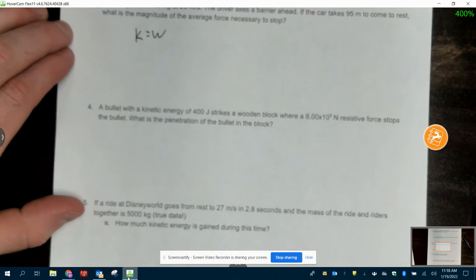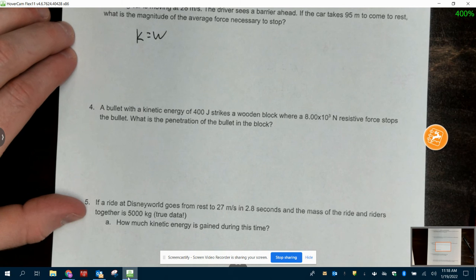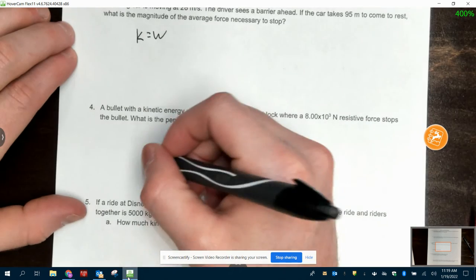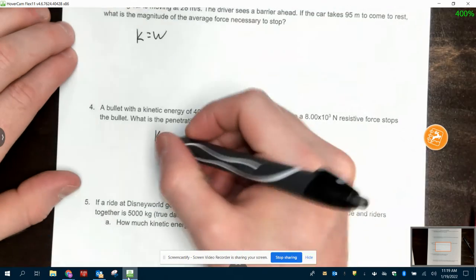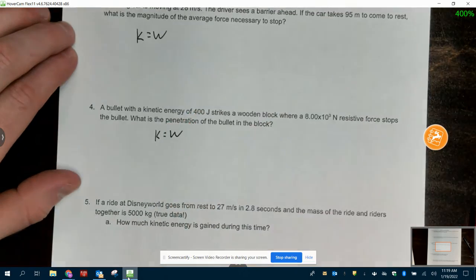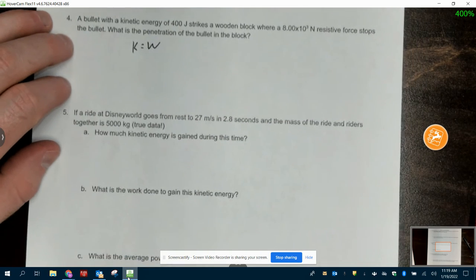Four. A bullet with kinetic energy 400 joules strikes a wooden block, where an 8 times 10 to the 3rd newton resistive force stops a bullet. What is the penetration of the bullet on the block? What type of energy do we start with? Where's that going? Work is done to stop it. So K equals W. That's happening a lot.